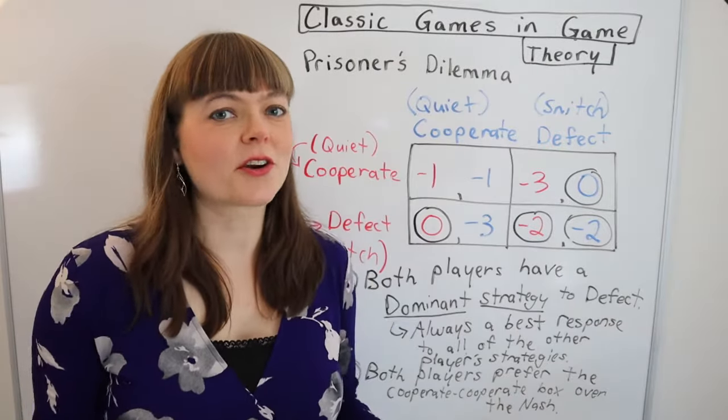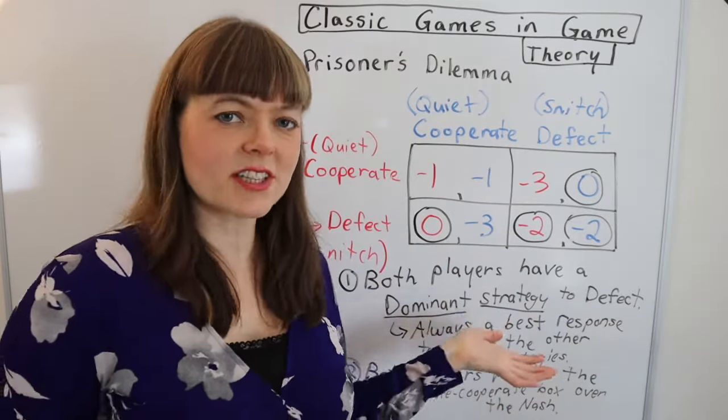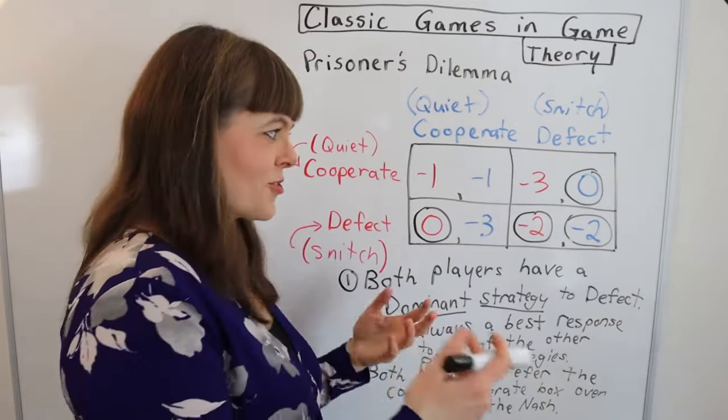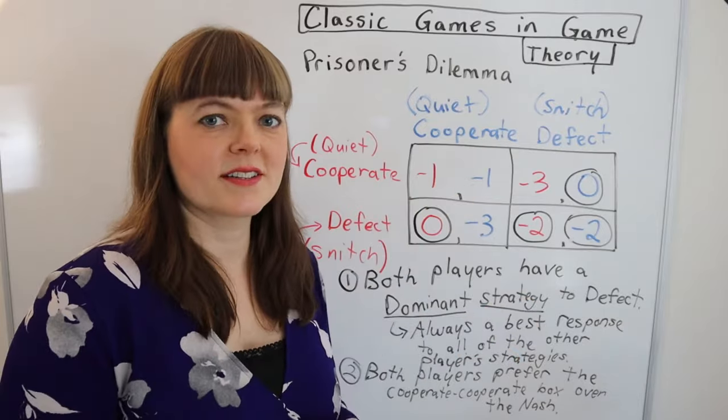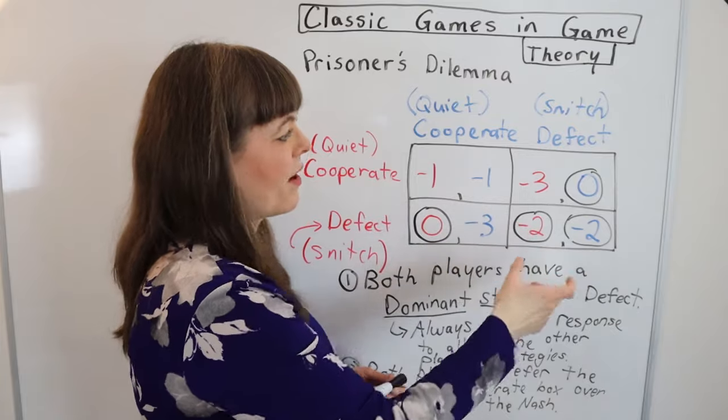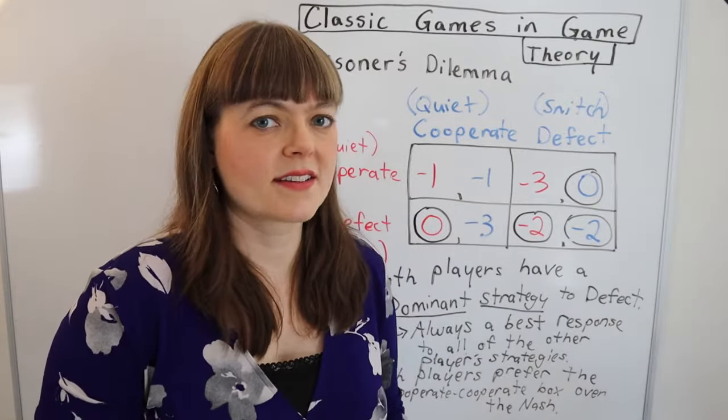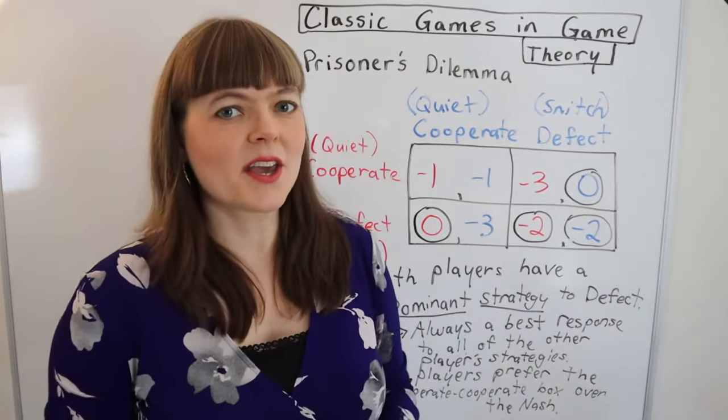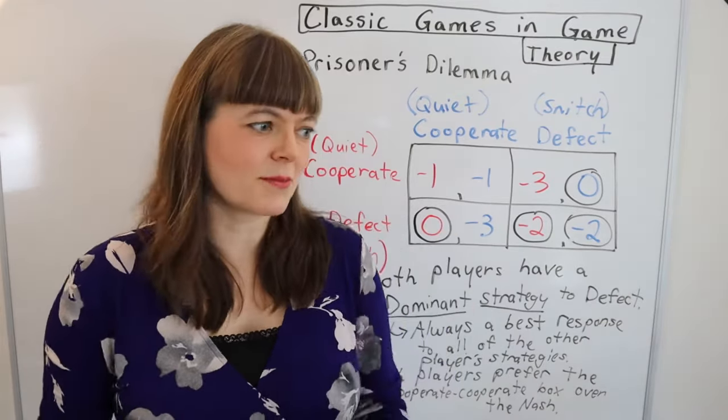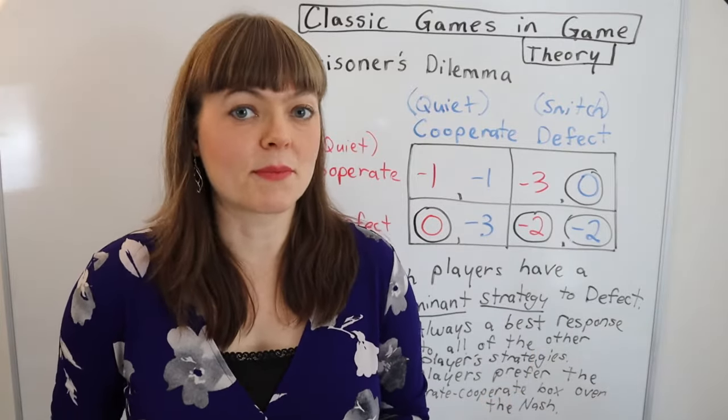So when you start to look for it, you just start to see prisoner's dilemmas everywhere. And this is especially important if you're a problem solver who's trying to design systems that structure incentives for people to cooperate. Because of course, as a system designer, you're asking the question, how could I change the payoffs in this table to get people to cooperate? Because that's better for everyone if I can do that. So understanding this dynamic, super, super essential for economists, for system designers, for biologists. This is the most important game to learn if you're learning game theory.